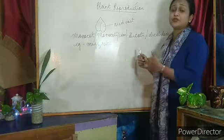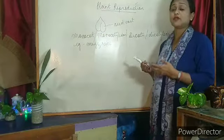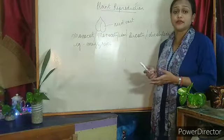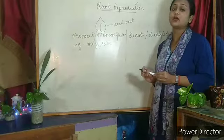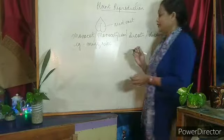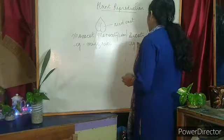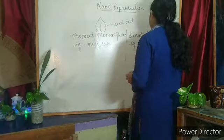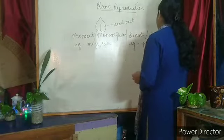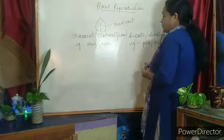In the case of dicot, the plants which produce seeds with two cotyledons are known as dicotyledonous plants, or dicot. For example, pea, gram, etc.